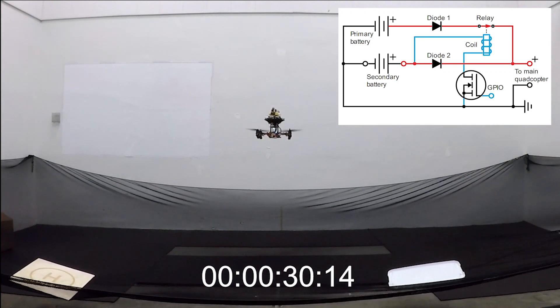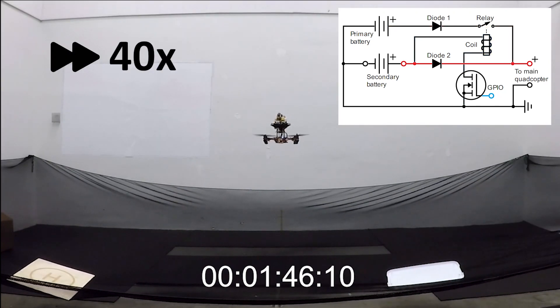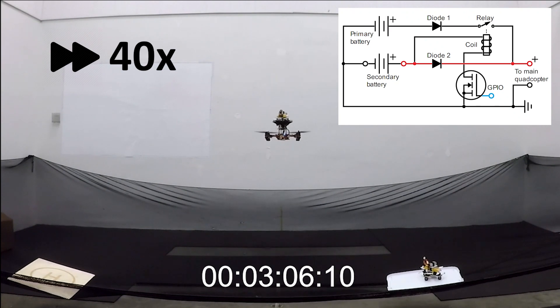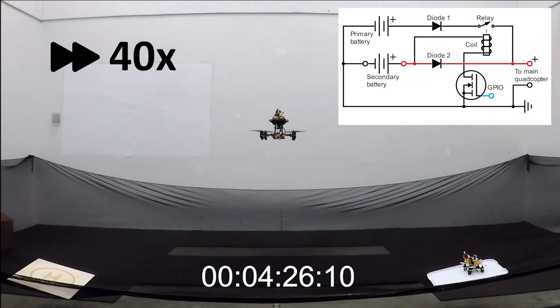With the secondary battery connected, the relay is now opened by applying a voltage at the gate terminal of the MOSFET. Now the main quadcopter hovers using only the secondary battery. We wait for the secondary battery to completely discharge.